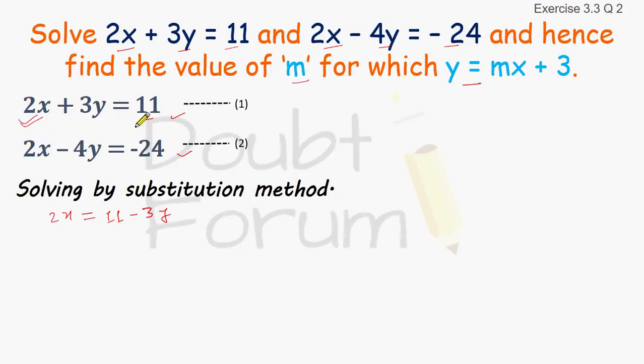We are modifying equation 1. 2x equals 11 minus 3y. Further, we will divide by 2 on the opposite side. So this is how we get equation number 3.